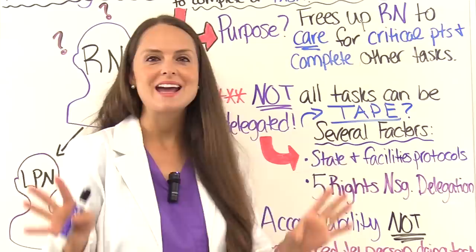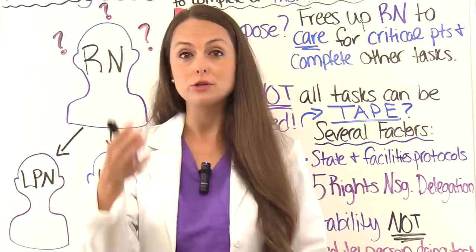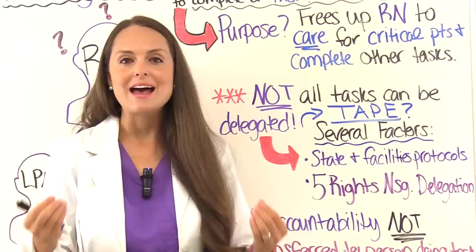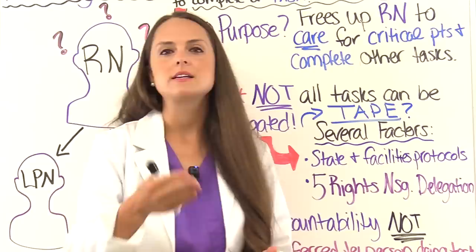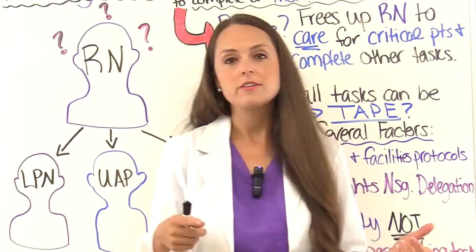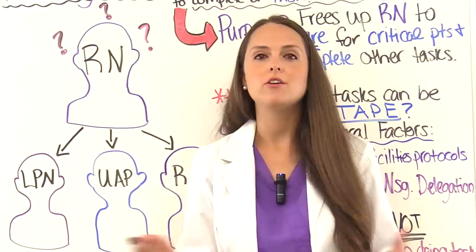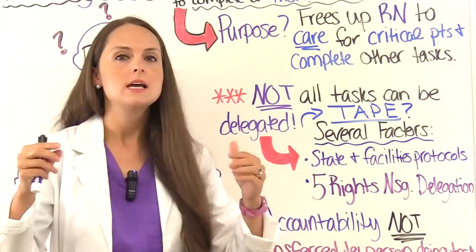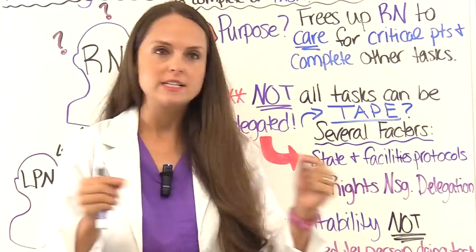Other factors include the state and facility's protocol. Every state in the United States is different on what they allow the LPN and the nursing assistant to do. For example, in some states LPNs can take a certification course and start IVs and give IV medications, while in other states they cannot. In some states nursing assistants can become certified to draw blood, obtain EKGs, or check blood glucose levels. For NCLEX, they'll ask about generalized tasks rather than state-specific differences.